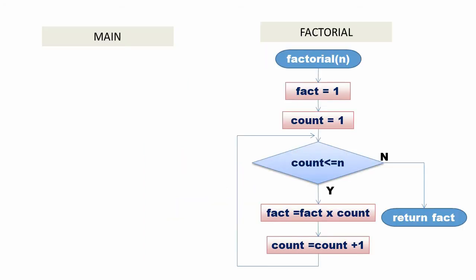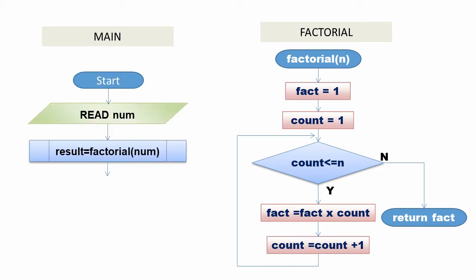Now let us see the steps in main function: Start, read the number, call function factorial with num as a parameter and store the result in variable result, then print the value of the result, and then stop.